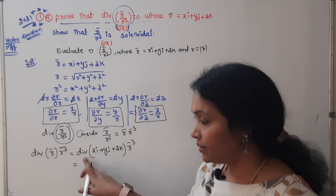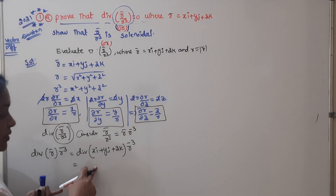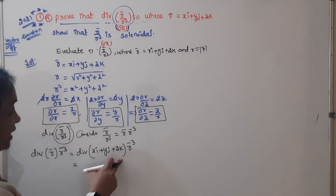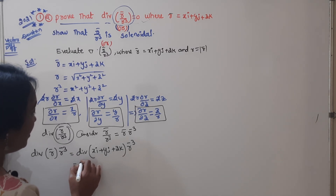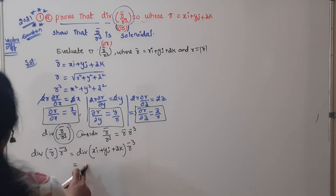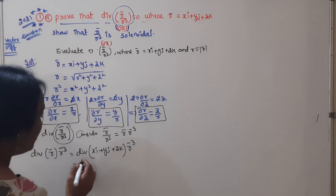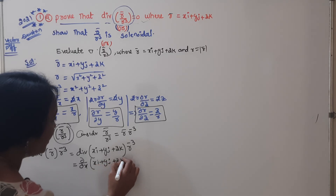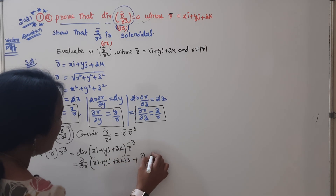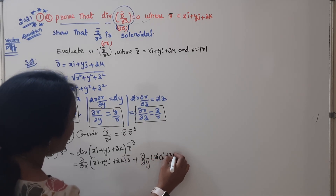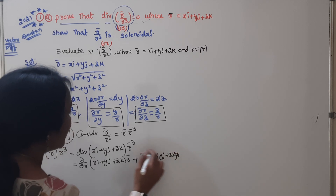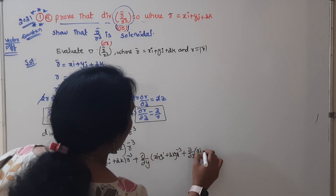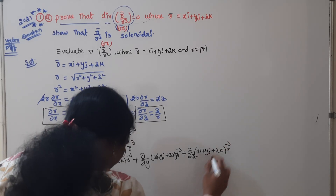Divergence (div) is nothing but ∂/∂x + ∂/∂y + ∂/∂z as a del dot product. So we expand: ∂/∂x of (xi + yj + zk)·r^(-3), plus ∂/∂y of (xi + yj + zk)·r^(-3), plus ∂/∂z of (xi + yj + zk)·r^(-3).